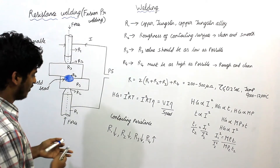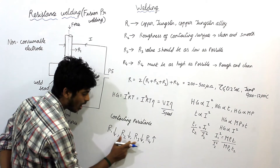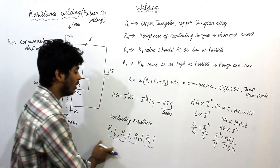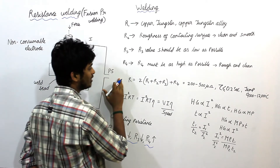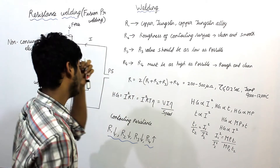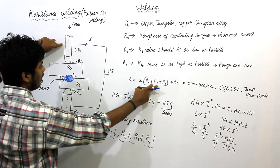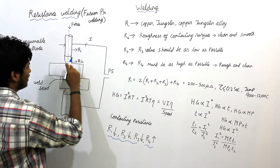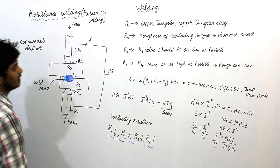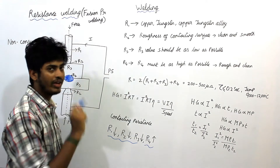To summarize: R1, R2, and R3 should be as low as possible, while R4 should be as high as possible. The total resistance is given by: 2R1 + 2R2 + 2R3 + R4. The factor of 2 for R1 accounts for two electrodes, 2 for R2 accounts for two electrode-to-plate contacts, 2 for R3 accounts for two workpieces, and there is only one faying surface R4 between the two workpieces.